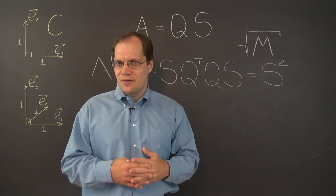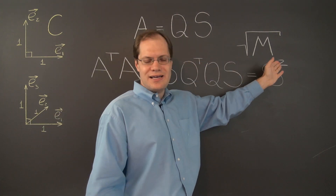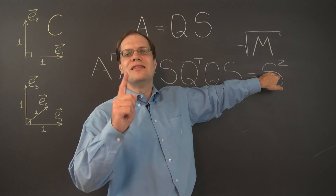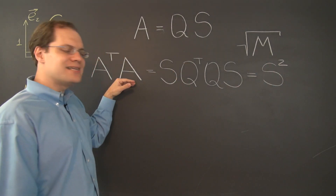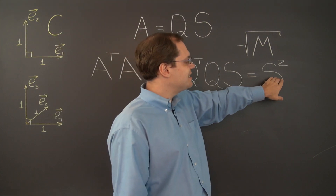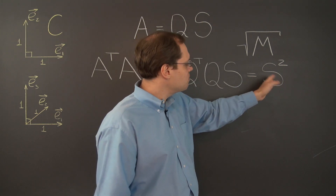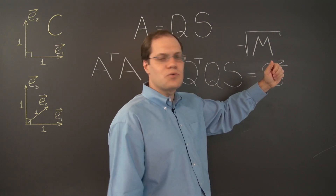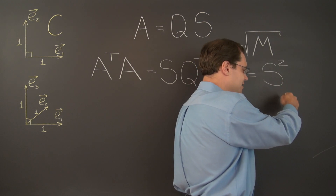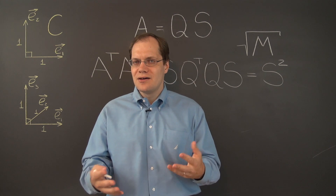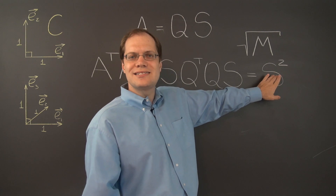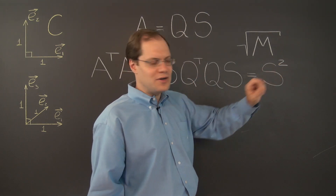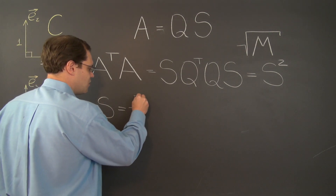This is where the uniqueness of the whole thing comes from. If we have this decomposition, then we must have S squared equals A transpose A. It's not hard to show that there is only a unique symmetric matrix with non-negative eigenvalues whose square equals a given symmetric matrix. If we didn't constrain the eigenvalues to be non-negative, we could play with their signs — for example, an eigenvalue of 9 could become either 3 or minus 3 — and uniqueness would be lost. But because we stipulate non-negative eigenvalues, S is unique.